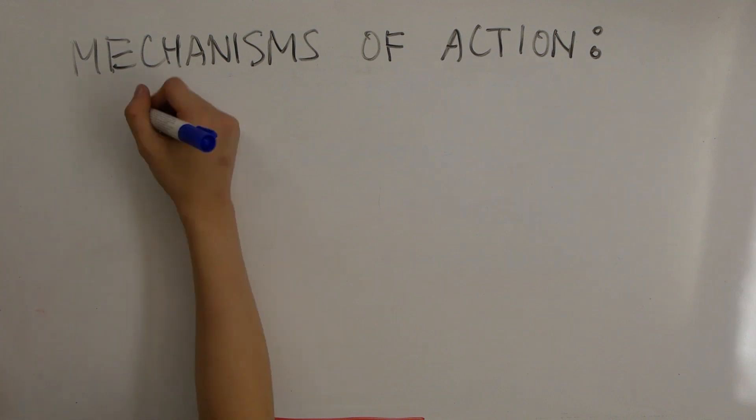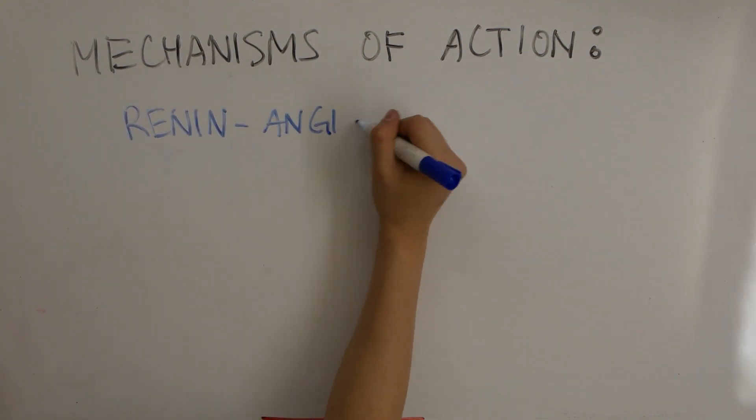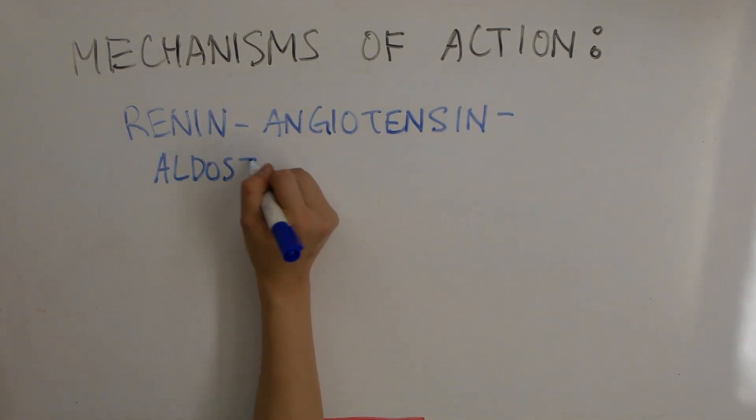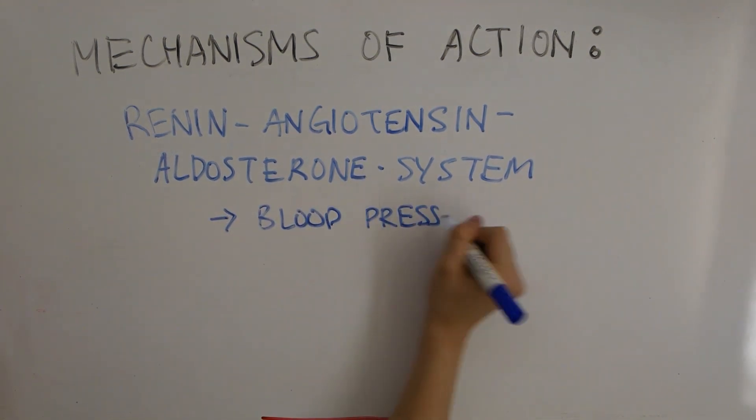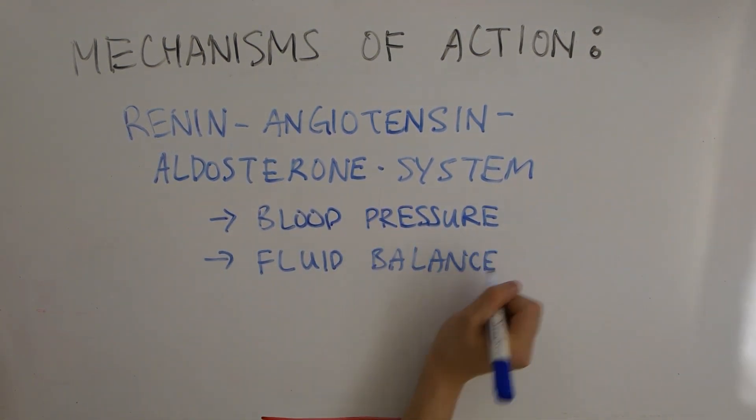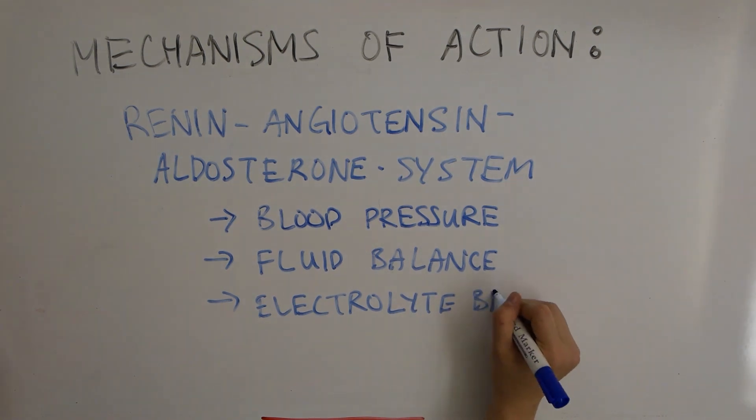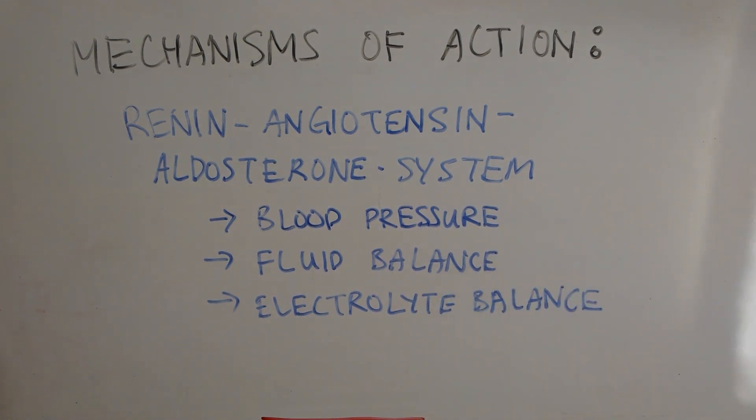blood pressure is still unclear. One of the many ways that the human body regulates blood pressure is through the renin-angiotensin-aldosterone system, which not only regulates blood pressure but also regulates fluid and electrolyte balance.